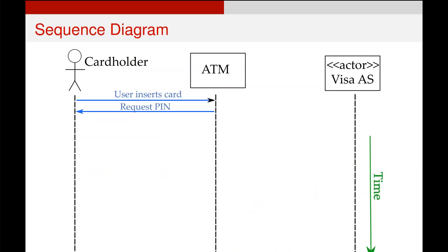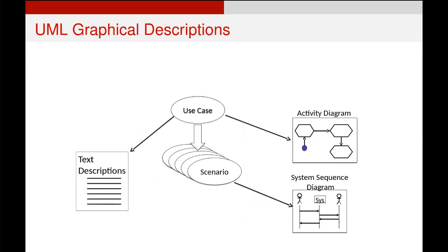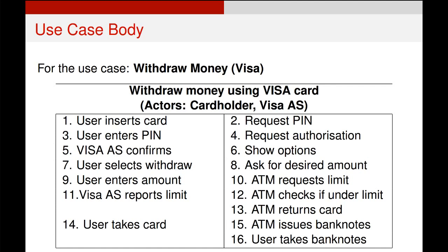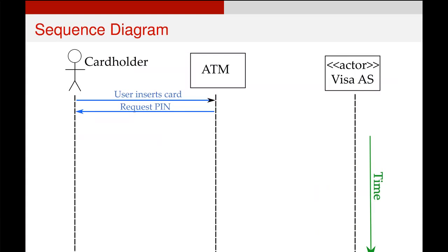So let's go back to our example of withdrawing money using our Visa. Here is our main success scenario use case body. If we want to see it as a sequence diagram, it looks like this. We start off with our primary actor, the card holder, on the left hand side at the top, and we've got our system, the ATM, at the top of that second line in the middle of the page. The steps from our use case body appear as lines on the diagram, and the arrow shows the direction of information flow — so when the user inserts the card, they're providing information to the ATM.